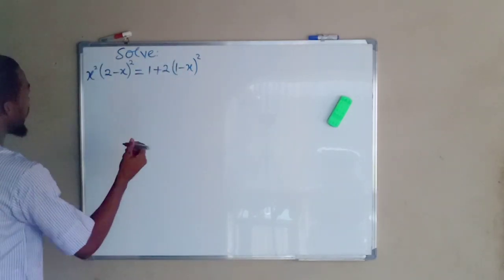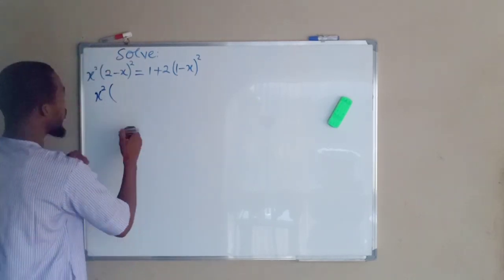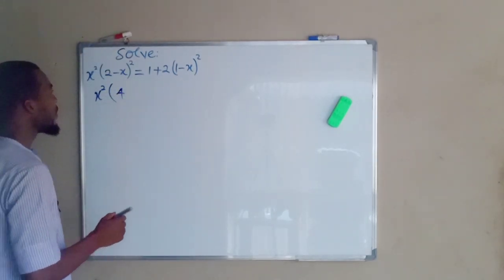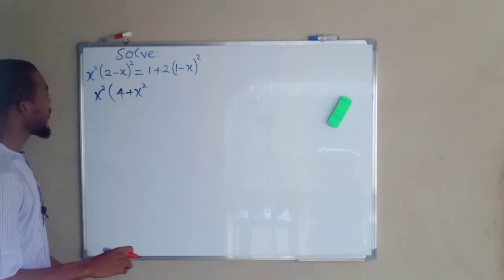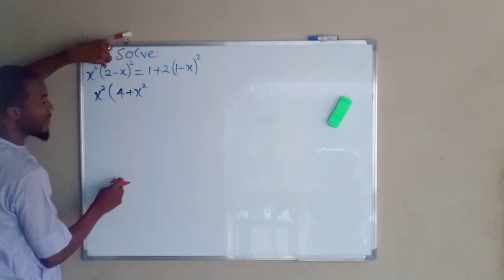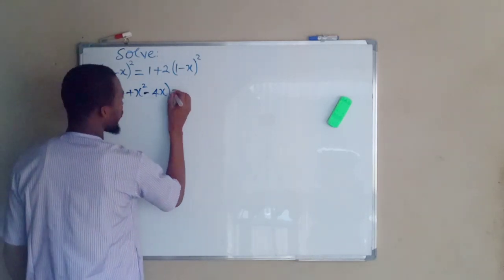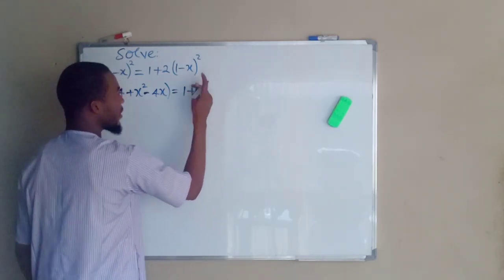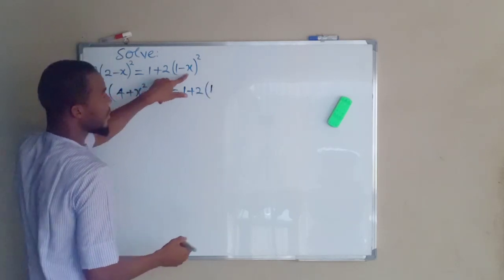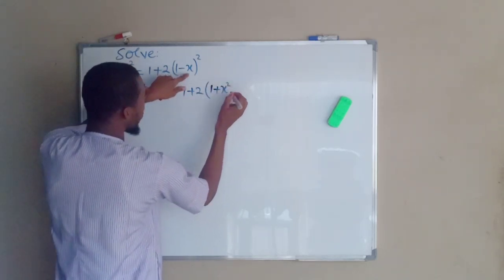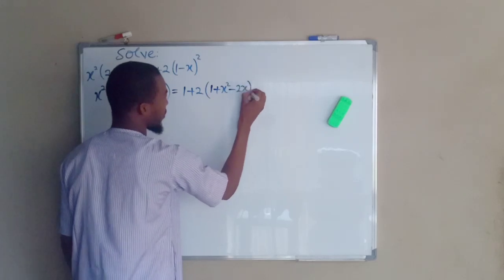From left to right, this is going to stay constant. If you square the first term you're going to obtain 4; square the second term you're going to obtain positive x squared. Then two times the first term times the second term: two times four times x gives us 4x. This is equal to the right hand side: we have one plus two in the bracket. We do the same thing — first term squared is one, second term squared is positive x squared, and two times one times negative x is negative 2x.